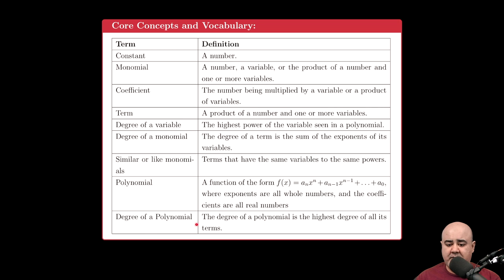Finally, the degree of a polynomial is the highest degree of all the terms. So remember that the degree is the sum of all the exponents of all the variables. The highest number, whatever that number happens to be, is called the degree of the polynomial.